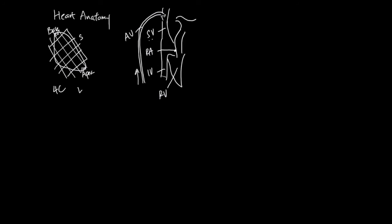The right ventricle will send the blood out to the pulmonary artery, which will send the blood to the lung lobes. You have two lobes on the left side and three lobes on the right side. The lungs will oxygenate the blood and the blood will come back. Two vessels from the left carry the blood back and two vessels from the right carry the blood back, and these vessels are the pulmonary veins.